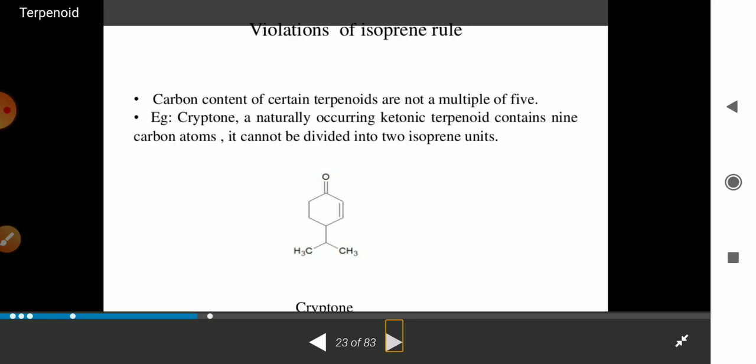In certain terpenoids, carbon numbers are not multiples of five. For example, krypton is a naturally occurring ketonic terpenoid containing nine carbon atoms, which can be divided into two isoprene units.